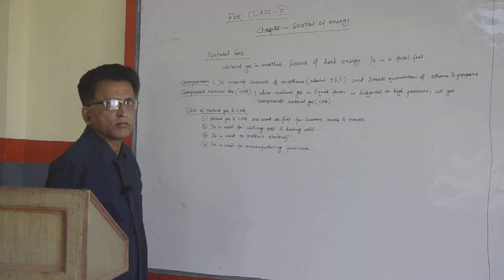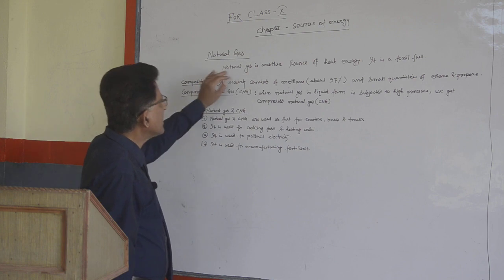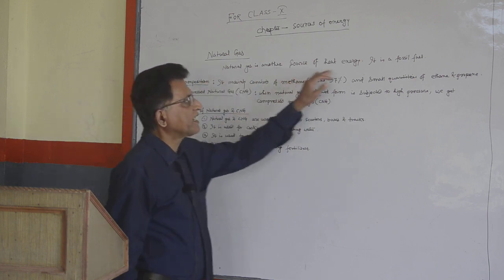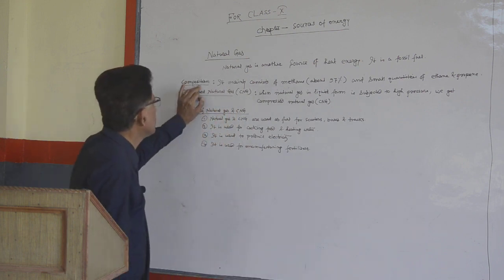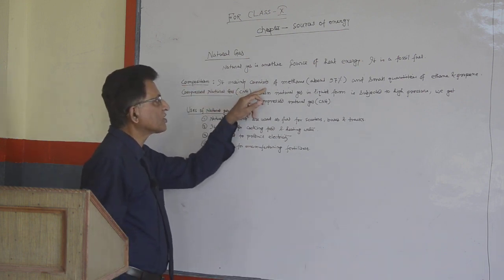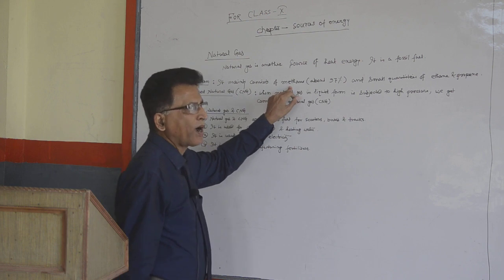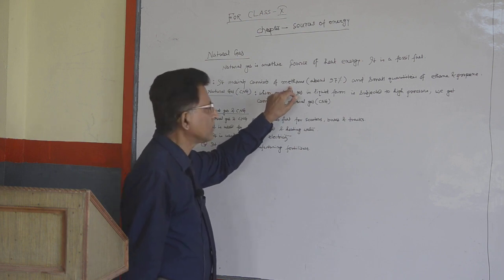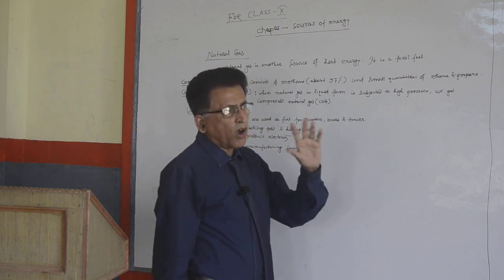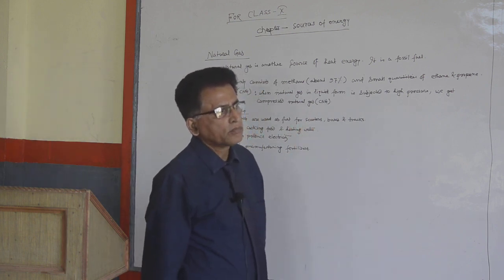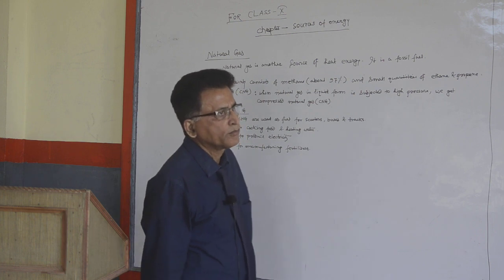Natural gas is another source of heat energy. It is a fossil fuel. Composition: It mainly consists of methane, about 97%, and small quantities of ethane and propane.